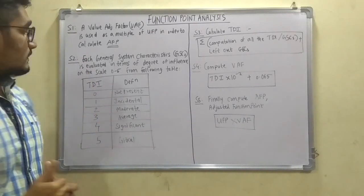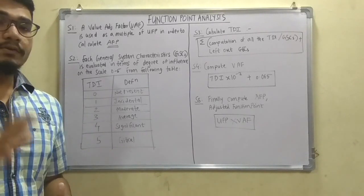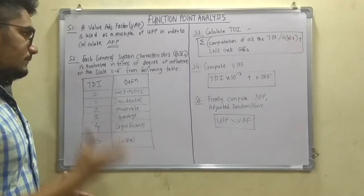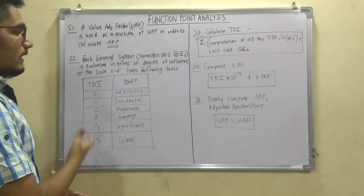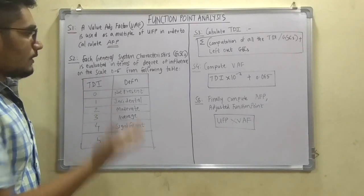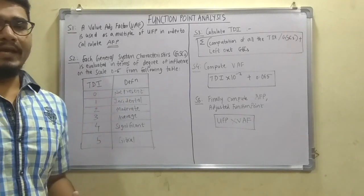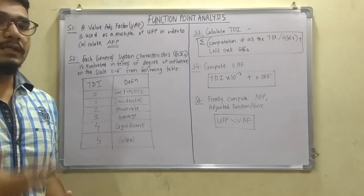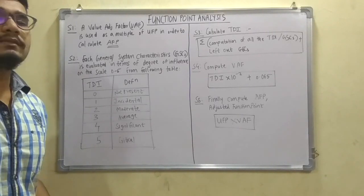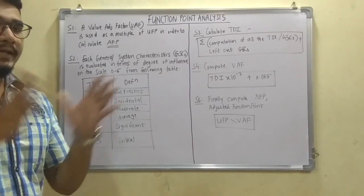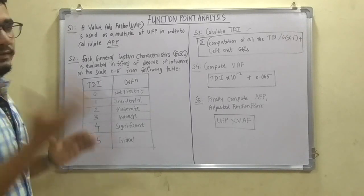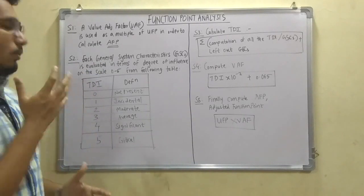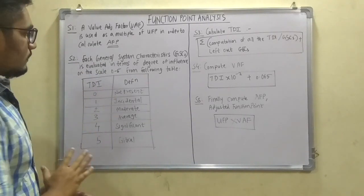Next is the second step. In second step we actually calculate the general system characteristics, that is GSCs, evaluated in terms of the degrees of influence in the scale ranging from 0 to 5 from the following table. Now based upon this we have some general system characteristics which is laid by a software testing rule. So a table is laid for that from ranging 0 to 5. Actually there are 14 different TDIs, so only I am considering the 6 TDIs for this.